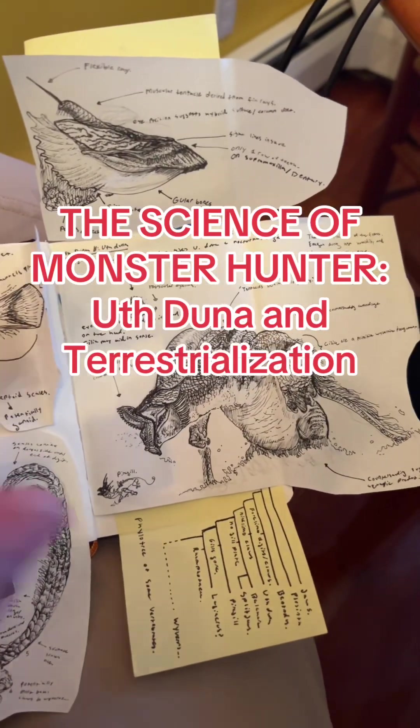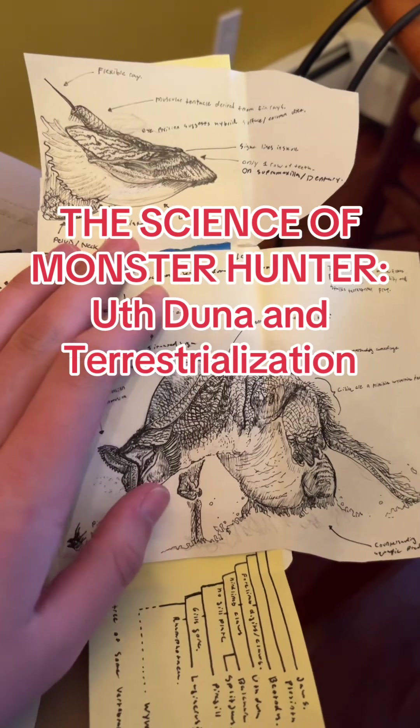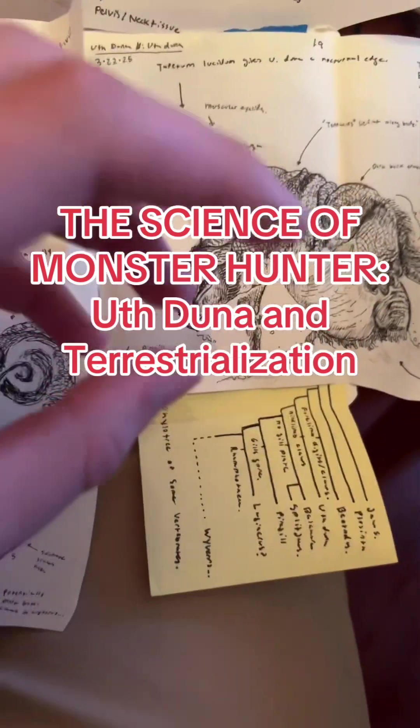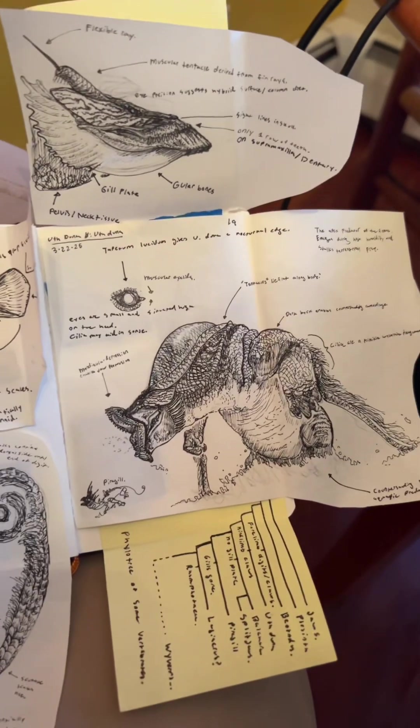Uth Duna is, at the same time, a relatively grounded creature design, but also incredibly bizarre and almost unfeasible morphologically. However, I think I found a way where it fits into a somewhat reasonable taxonomy.